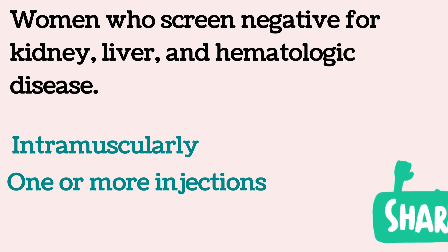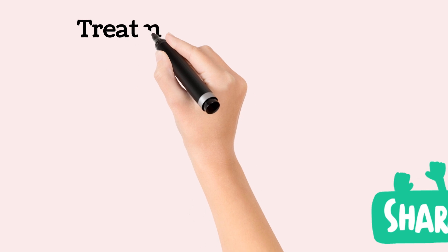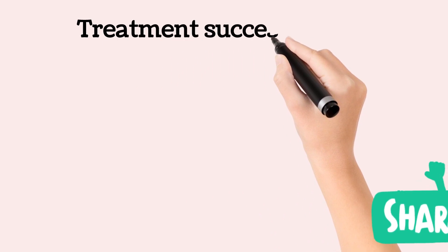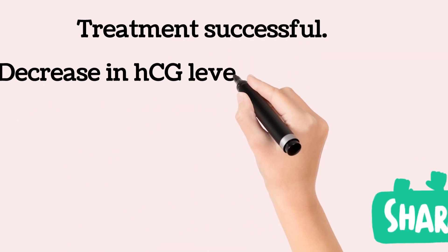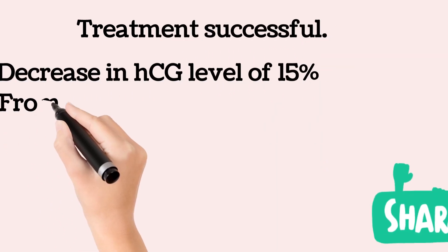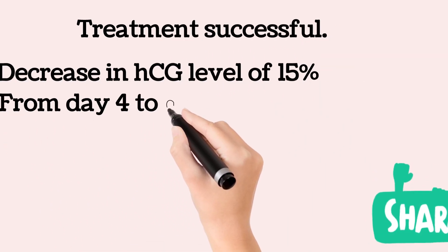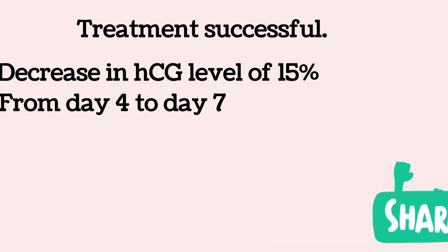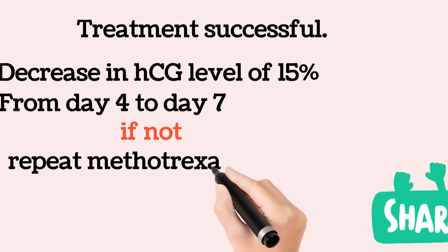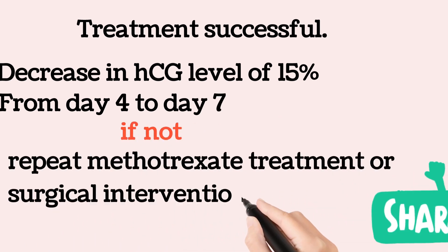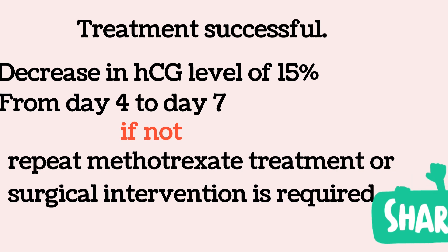From day 4 to day 7 after methotrexate treatment, a decrease in HCG level of at least 15% must be present to consider the treatment successful. Otherwise, repeat methotrexate treatment or surgical intervention is required.